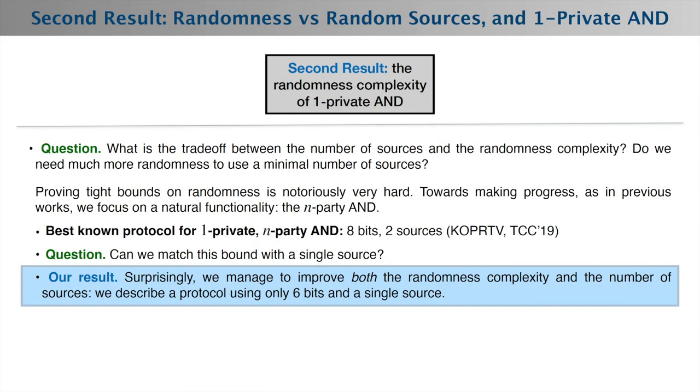A second result we study is the relation between randomness complexity and random source complexity for simple functionalities. Specifically, we look at the n-party AND functionality in the setting of 1-privacy. We ask: is it possible to match the best known protocol that uses 8 bits and 2 sources using the minimum number of sources, which by our previous result is a single source?